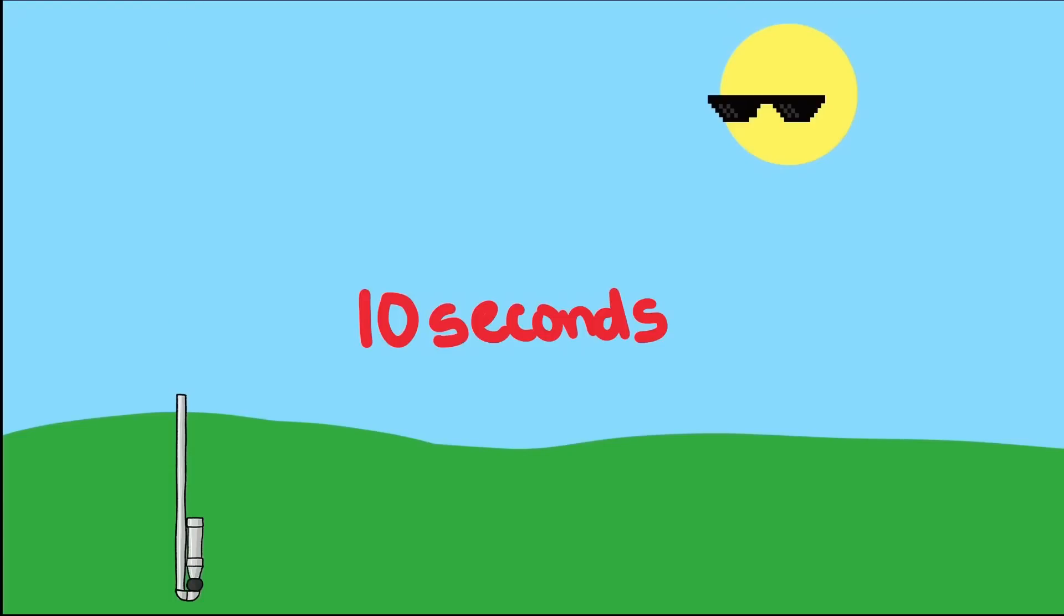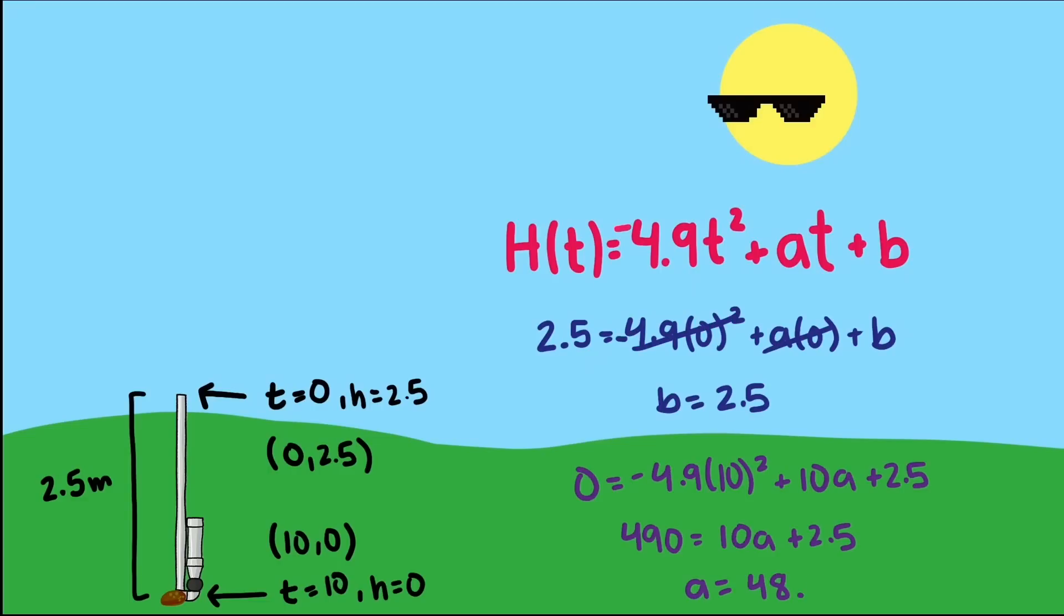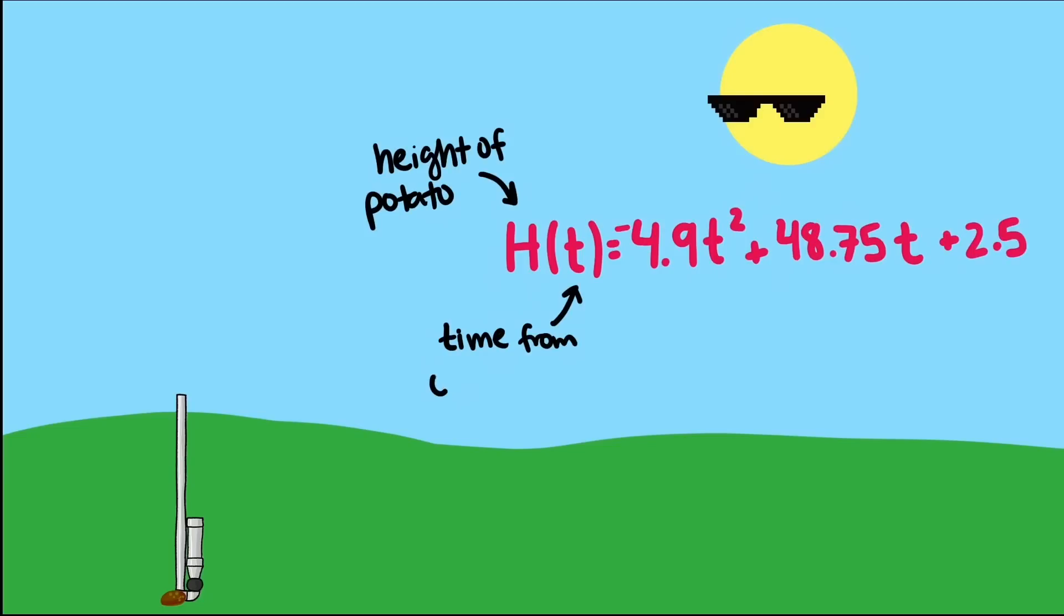In that video, we shot my potato gun straight up in the air, and timed the potato to see how long it was in the air. We then used this physics equation and values from our timed shot to solve for our unknowns. We ended up with this formula that gives the height of the potato for any time t from t equals 0 to t equals 10.